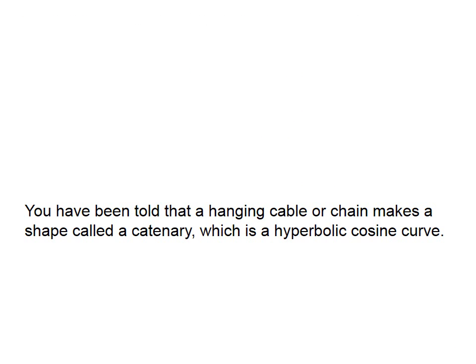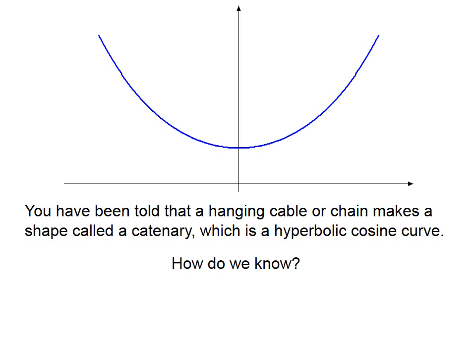You have been told that a hanging cable or chain makes a shape called a catenary, which is a hyperbolic cosine curve. How do we know? Today we are going to derive the equation.